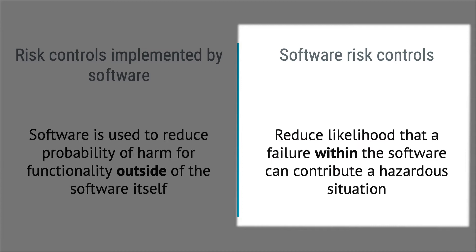If we assume that the steam sterilizer warning is an important one, then we should assess if we can add a software risk control measure to that functionality. This could, for example, be adding priorities in the software, ensuring that the warning will always be displayed on top of other messages. So, risk control measures implemented by software are used to reduce risks outside the software, such as the steam sterilizer warning. Software risk control measures, on the other hand, are reducing the likelihood of failures within the software.